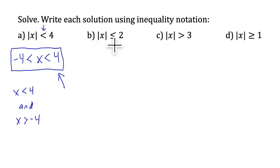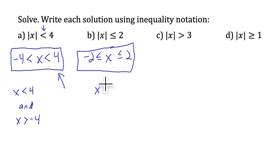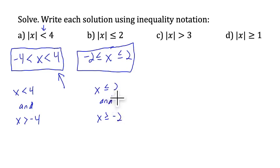Same thing for the absolute value of x less than or equal to 2. x is between negative 2 and positive 2, including those endpoints. The alternative way is to write x is less than or equal to 2 and x is greater than or equal to negative 2. What 'and' means in mathematics is both conditions must be true. For instance, negative 100 is less than or equal to 2, but it is not greater than or equal to negative 2, so it does not satisfy this 'and' statement.